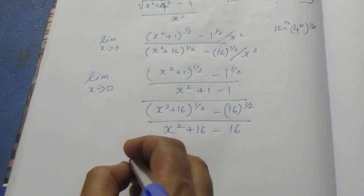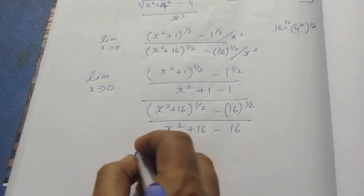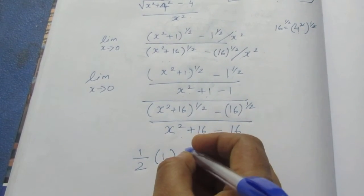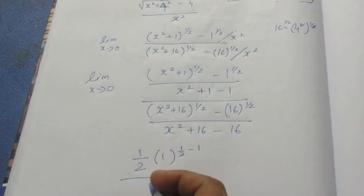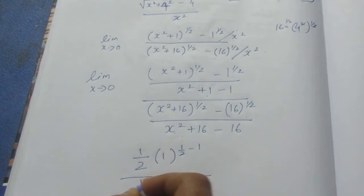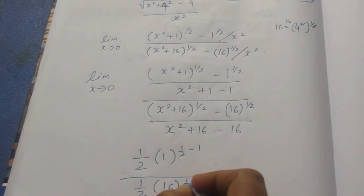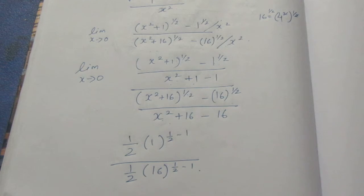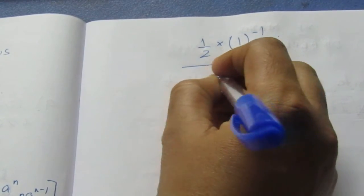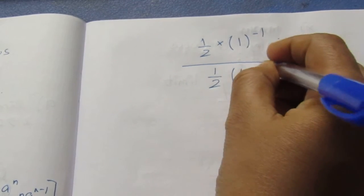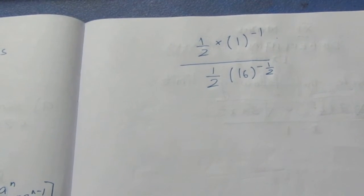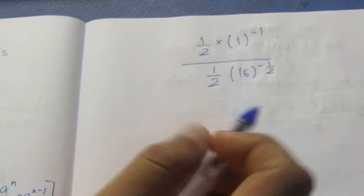Now let's apply the formula when x tends to 0. a power n minus 1: n is the half. Half a is the numerator, power n minus 1, which is half minus 1, by denominator n is the power half. So half times 1 power minus 1, times 1 power, minus 1 by half times 16 power n minus 1, half minus 1. This half is the power, 16 power minus half, which is negative. We take a step to this negative and cancel half and half.